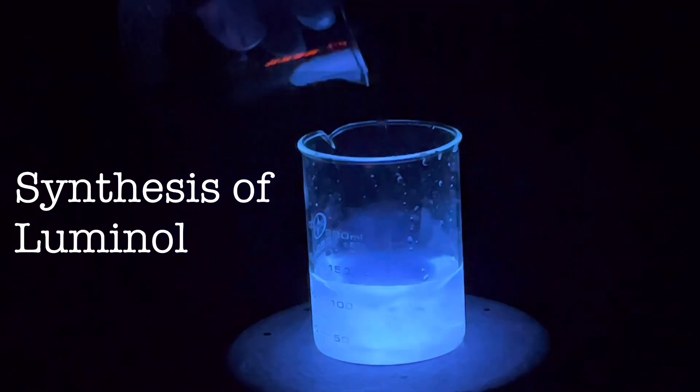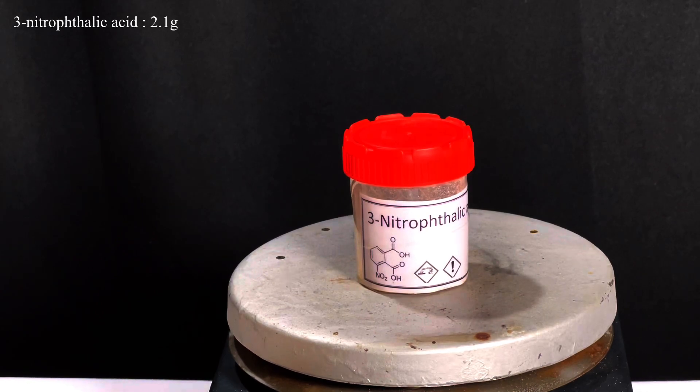Hello friends, in this video we will synthesize luminol and demonstrate its property of chemiluminescence. For this experiment, we will need 2.1 grams of 3-nitrophthalic acid, the synthesis which is included in a previous video.